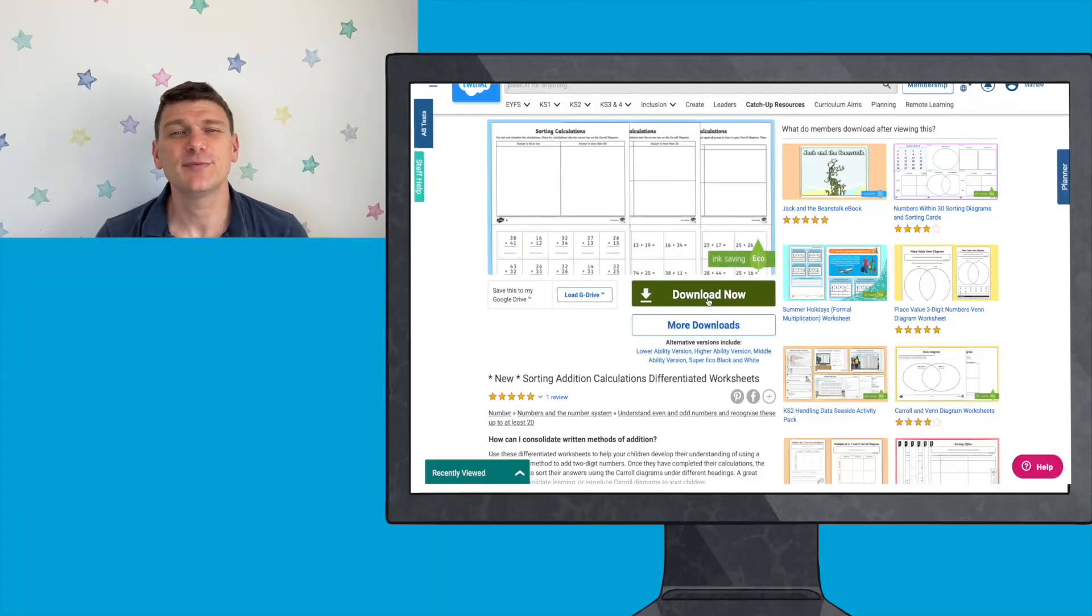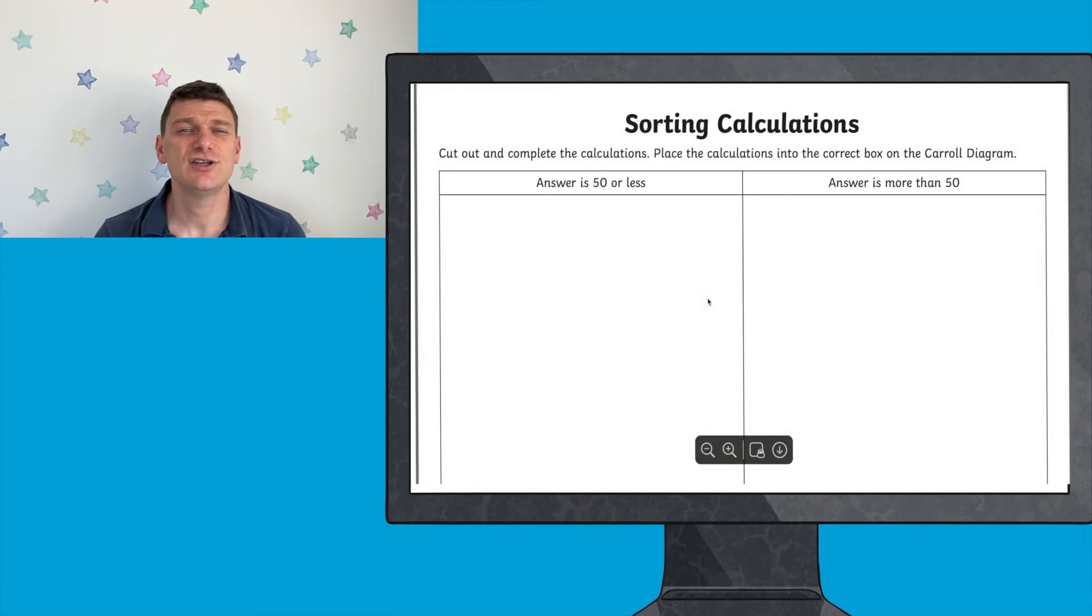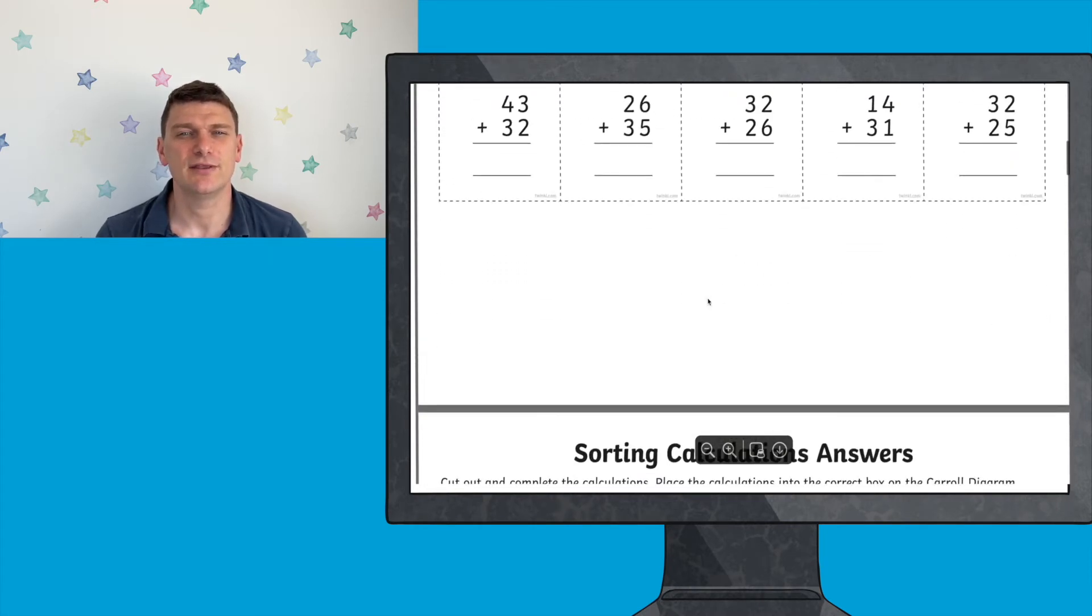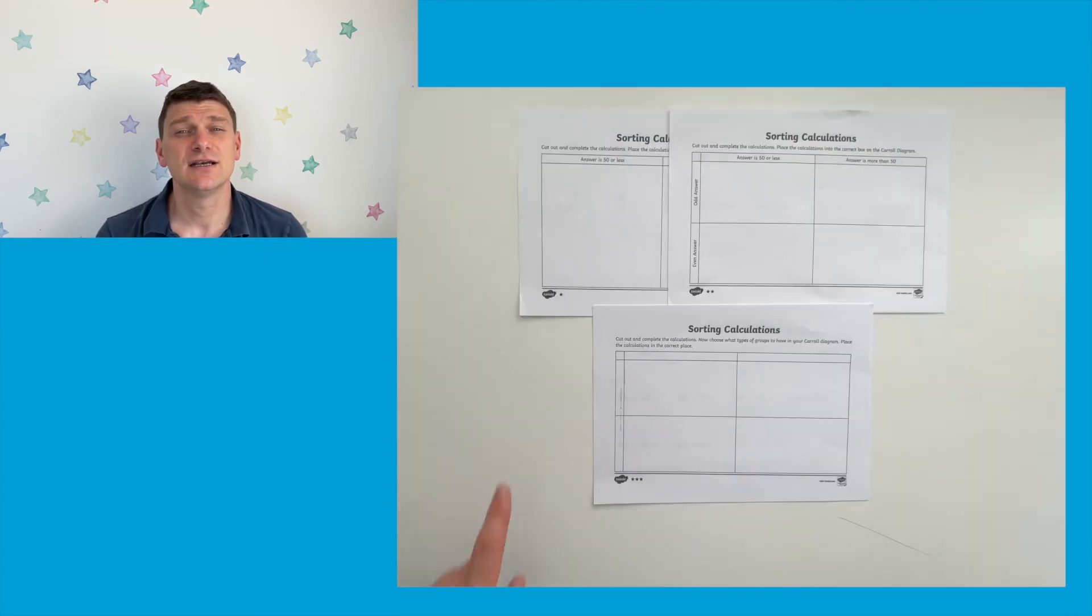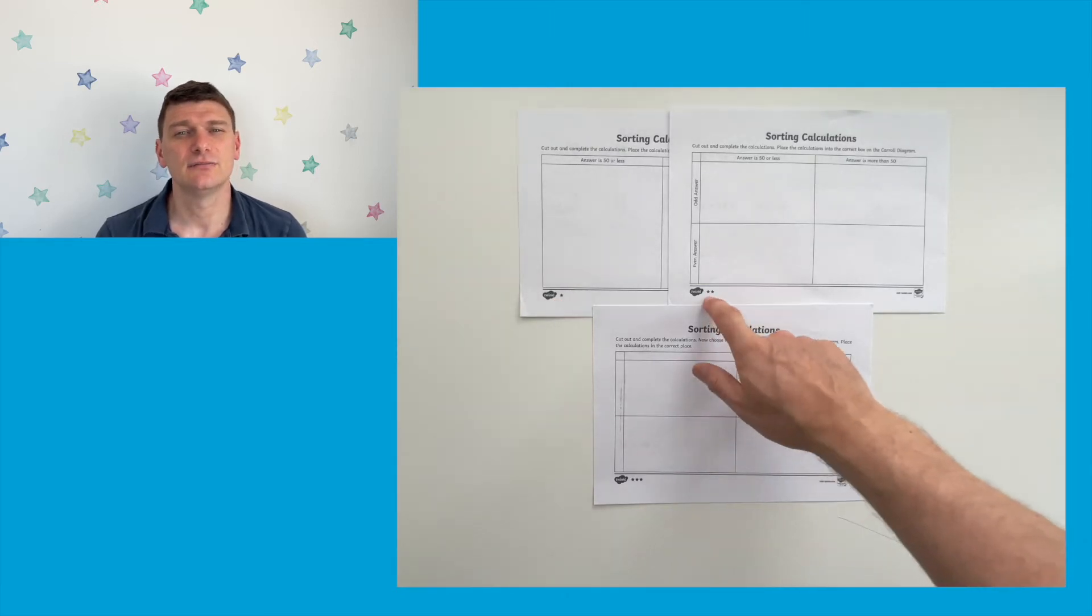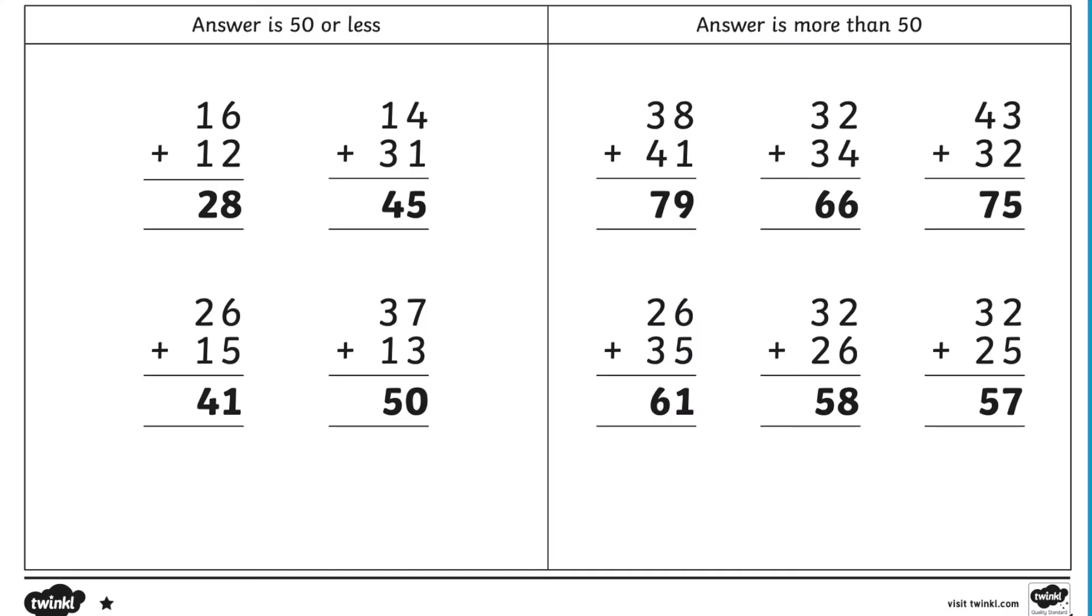When you download the resource from the Twinkle website, you'll notice it's differentiated using Twinkle's three star method. One star is the easiest, two stars is more difficult, and three stars is harder still. There's also a handy answer sheet for you too.